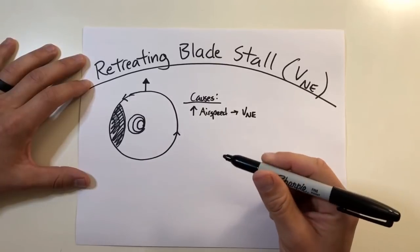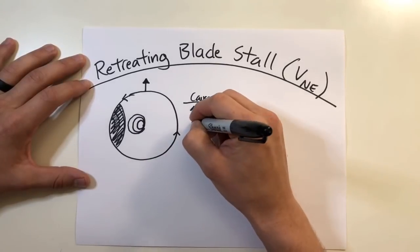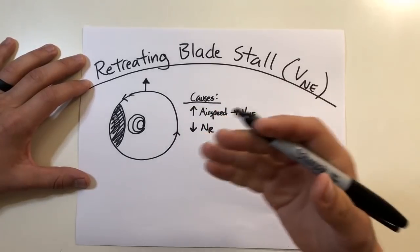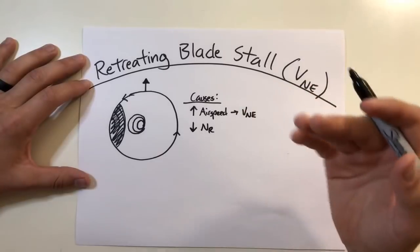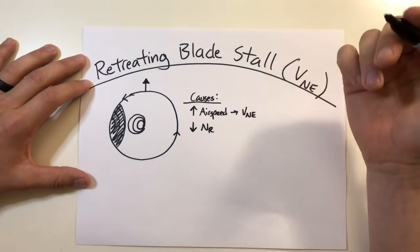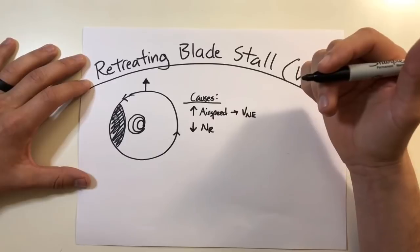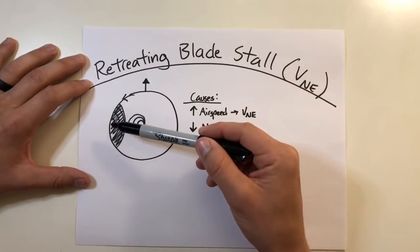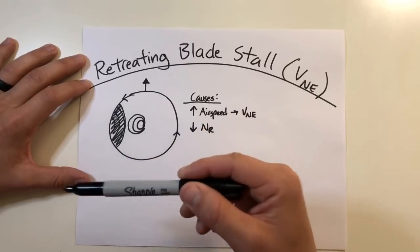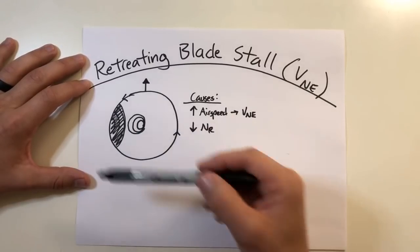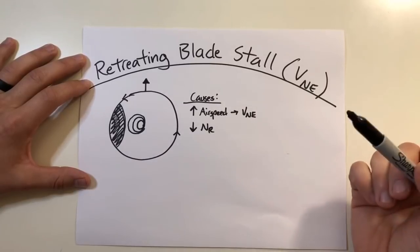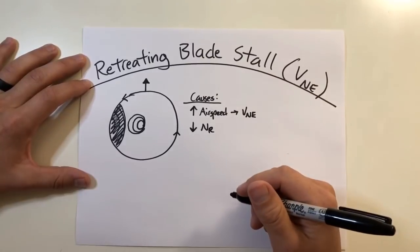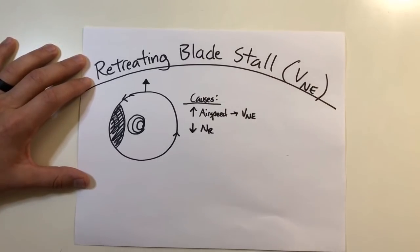Another thing that can cause retreating blade stall would be low rotor RPM — low NR speed of the rotor. From the lift equation, velocity has an exponential effect on lift and drag. So if the rotor is allowed to slow down, you're potentially having high angles of attack at low rotor RPM, resulting in a stall condition sooner than if you had a normal or higher NR. Low NR or low rotor RPM can cause this retreating blade stall condition.